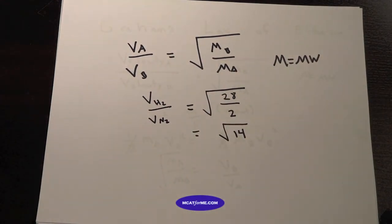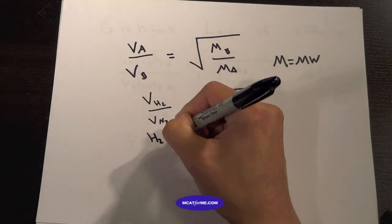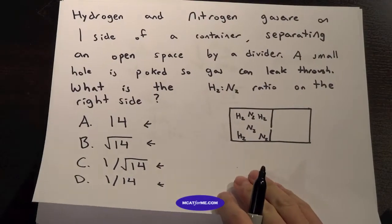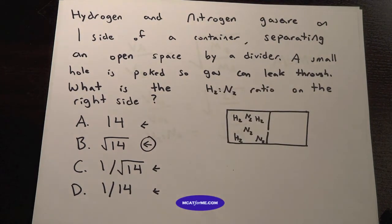So that would be square root of 14, and that would be the ratio of the amount of hydrogen to nitrogen on the other side. If we look back at our answers, we have this right here. B would be the correct answer, the square root of 14.